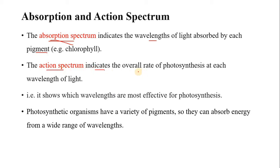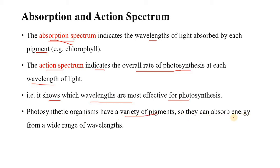An action spectrum indicates the overall rate of photosynthesis at each wavelength of light. Action spectrum shows which wavelengths are most effective for photosynthesis — it indicates in which wavelengths photosynthesis can be more efficient and more effective, i.e., in which light the rate of photosynthesis is strongest. So it is called action spectrum. Photosynthetic organisms have a variety of pigments so they can absorb energy from a wide range of visible spectrum.